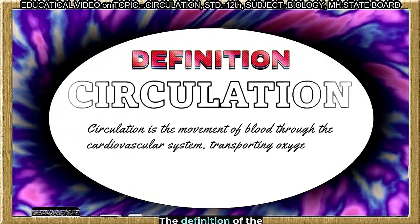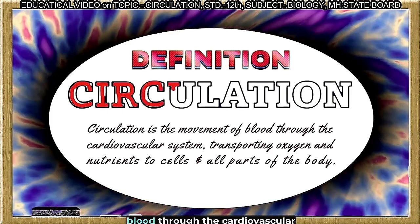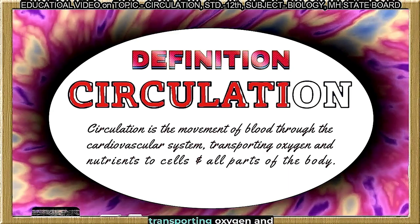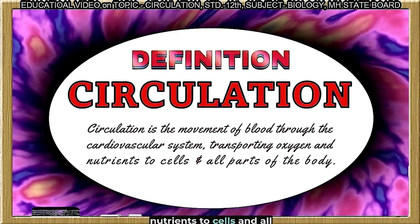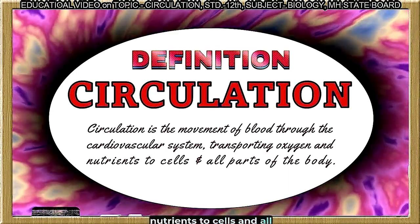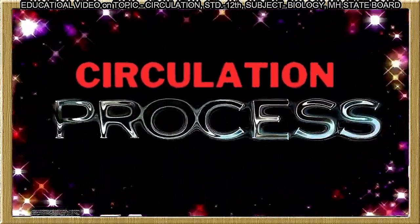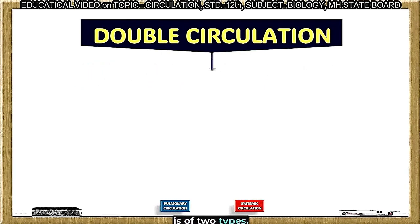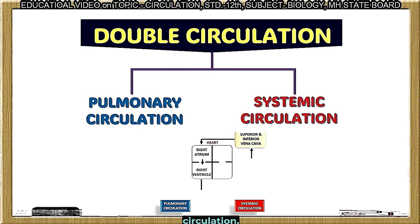The definition of circulation is the movement of blood through the cardiovascular system, transporting oxygen and nutrients to cells and all parts of the body. Basically, circulation in human beings is of two types: one is pulmonary circulation and another one is systemic circulation.